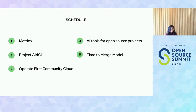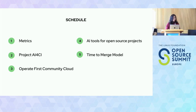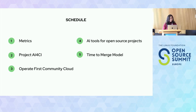Let me give you a brief overview of the agenda for today. We are going to give a brief intro on what project metrics are and how they can support community health. Then I'll introduce our project AI for CI. I'll also briefly touch on the Operate First community cloud that we are using underneath all of this. Then I'm going to talk about some AI tools and techniques that you can probably use for your open source projects. And finally, I'm going to do a little deep dive into the time to merge model that we came up with.